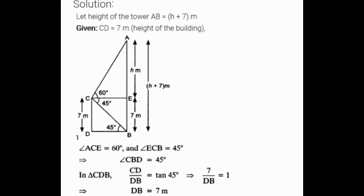Let's consider triangle CDB. In right triangle CDB, CD upon DB equals tan 45 degrees. Here I can apply tan theta, that is opposite side by adjacent side. Tan 45 degrees equals 1, which implies 7 upon DB equals 1. Cross-multiplying both sides, DB equals 7 meters. Therefore the value of DB equals 7 meters.